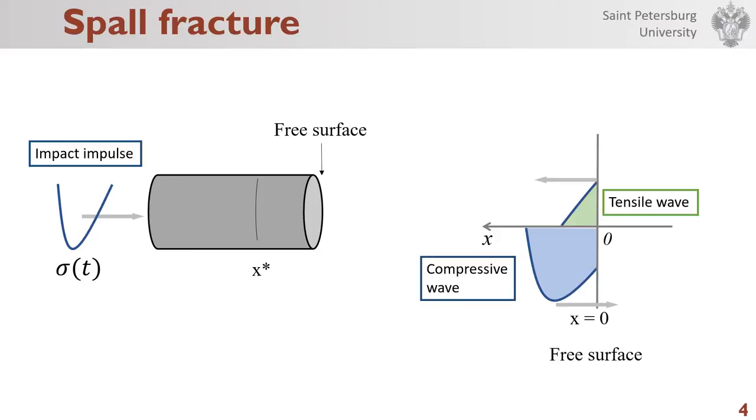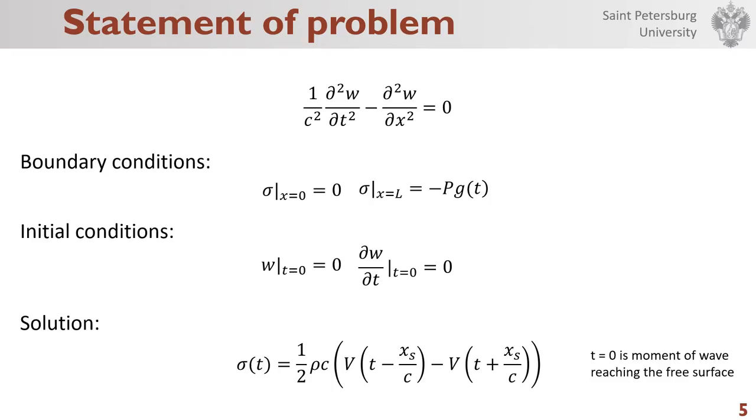Since the tensile strength of material is usually lower than its compressive strength, a failure occurs in the sample section x asterisk. Let us now proceed to consider modeling of spall fracture. Here, linear elasticity is assumed.